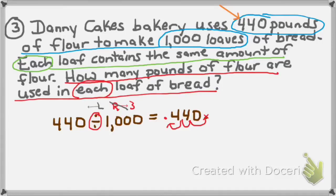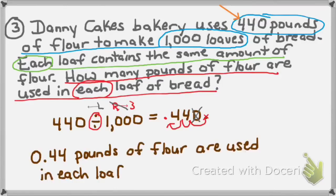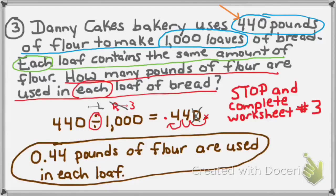Are there any unnecessary zeros in this number? Yes — this ending zero is unnecessary. This is a word problem, so my answer needs a unit. I will write 0 and 44 hundredths pounds of flour are used in each loaf. That's my final answer. Please stop the video and complete worksheet number 3 right now.